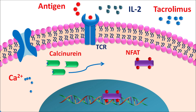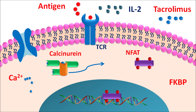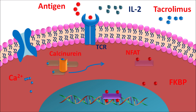Tacrolimus is an immunosuppressant that inhibits T-cell immune activity. One of its targets is FKBP — FK506 binding protein. Tacrolimus binds to FKBP such that it forms a complex with calcineurin, which inhibits the activity of calcineurin. This results in reduced activation of NFAT, causing NFAT dephosphorylation and inactivation. Finally, this results in decreased gene transcription and reduced release of IL-2, suppressing the immune response.